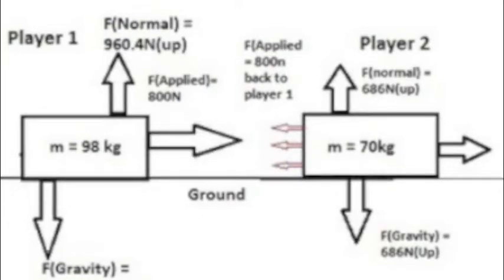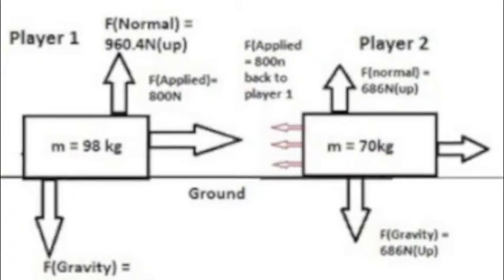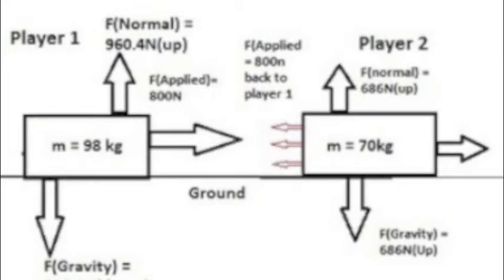The diagram shows how the applied force acts from player 1 to player 2. As you can see, player 1 has more mass than player 2, which means player 1 would be changing the direction of player 2 and sending him backwards.